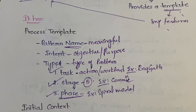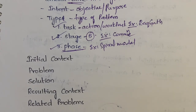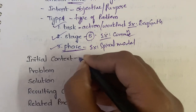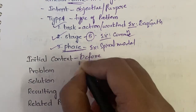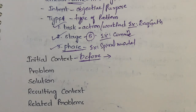Next is initial context. Initially you will be defining the context of the pattern — context means the situation in which you can use the pattern. Before initiating the pattern itself, you define the conditions under which you can use this pattern. Since you are defining the context before the start of the pattern, it is called initial context.